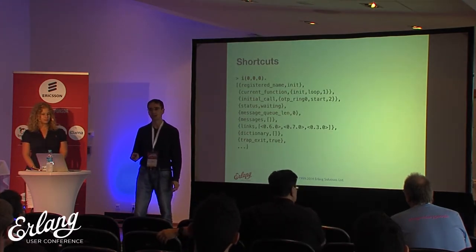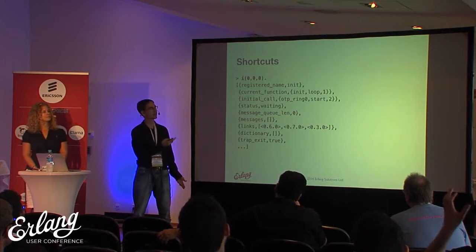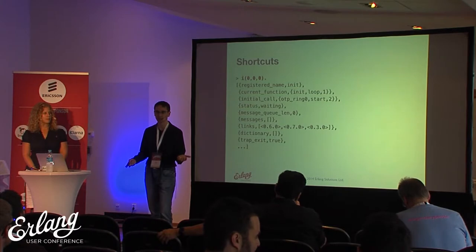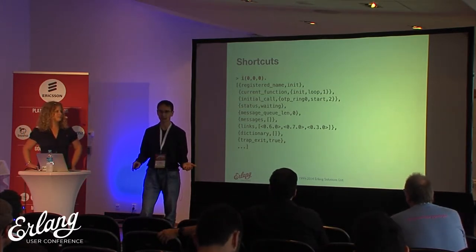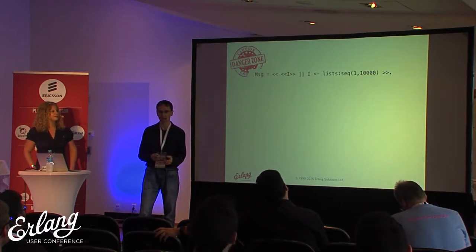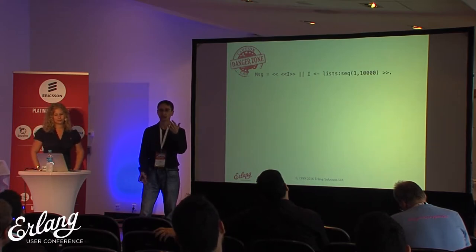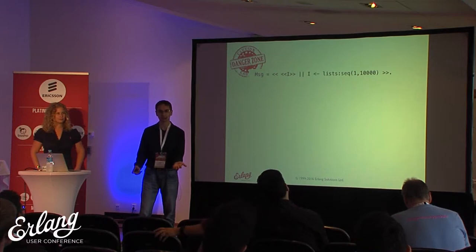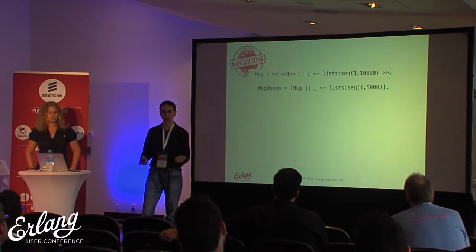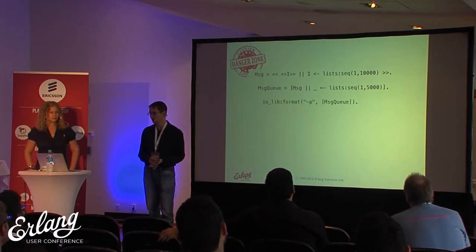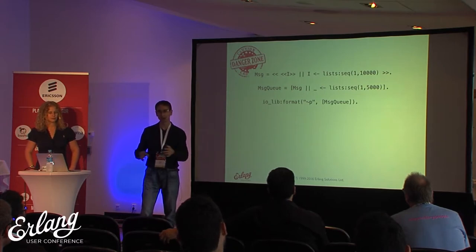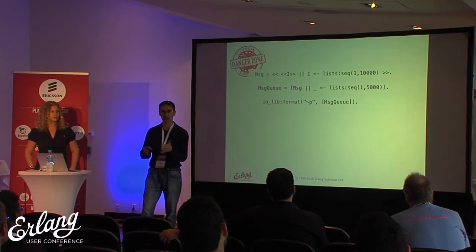I even have shortcuts in the shell, documented in the module code C, so I just need to say i(0,0,0) and I will get a bunch of information about the init process. This is very flexible and convenient in some sense because you can do whatever you want, but it's also very dangerous. Let's say I have a process that has a large message queue and I want to see what's inside it. Say one message is 10 kilobytes long, and the message queue has 5,000 elements. I get this message queue and ask io_lib:format to convert it into a string.